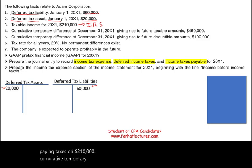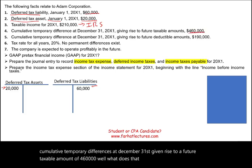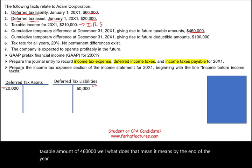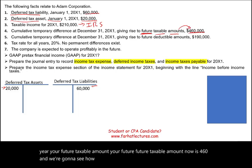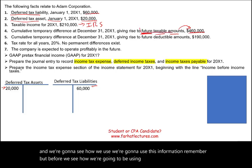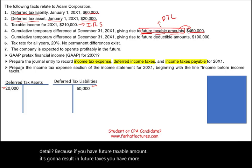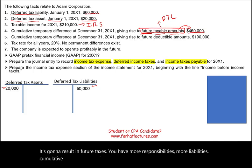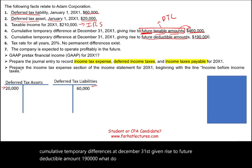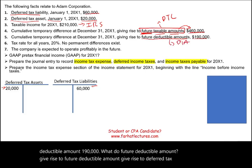Cumulative temporary differences at December 31st give rise to a future taxable amount of $460,000. By the end of the year, your future taxable amount is $460,000. Remember, future taxable amount results in deferred tax liability — if you have a future taxable amount, it's going to result in future taxes, more liabilities. Cumulative temporary differences at December 31st also give rise to a future deductible amount of $190,000. Future deductible amounts give rise to deferred tax assets.